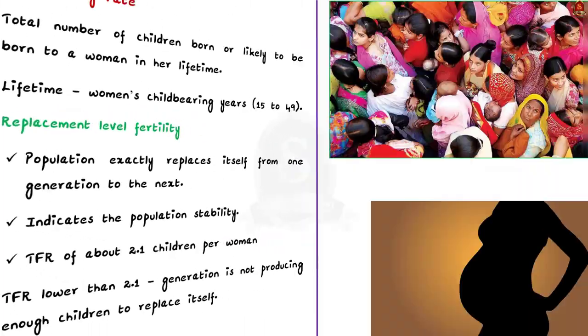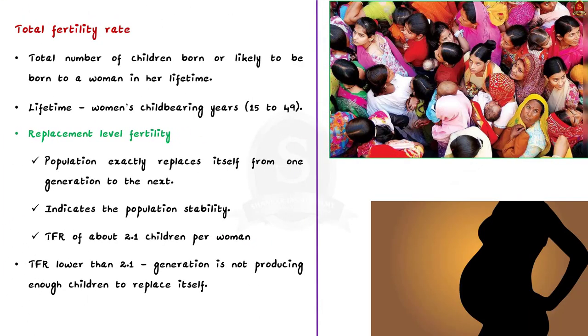To understand the dynamics of all of it, you need to know about total fertility rate. The total fertility rate of a population is referred to as the total number of children born or likely to be born to a woman in her lifetime. Here, lifetime indicates the woman's childbearing years, which is roughly between the ages of 15 to 49 years.